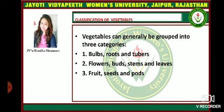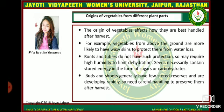Regarding the classification of vegetables, vegetables can generally be grouped into three categories: bulbs, roots and tubers; flowers, buds, stems and leaves; and fruits, seeds and pods. The origin of vegetables from different plant parts affects how they are best handled after harvest.